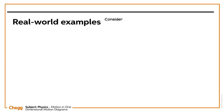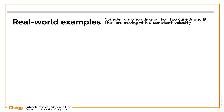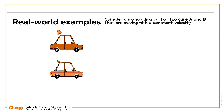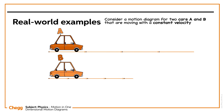Consider a motion diagram for two cars, A and B, that are moving with a constant velocity, as shown below. To understand this motion diagram, which car is moving faster?